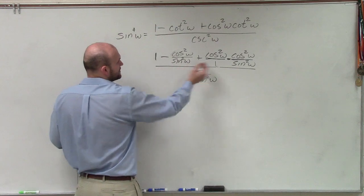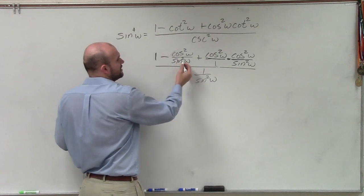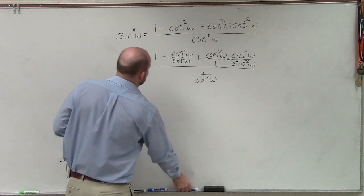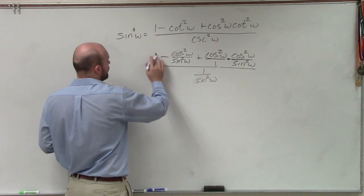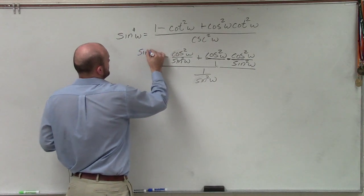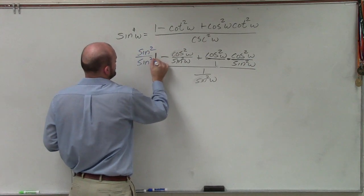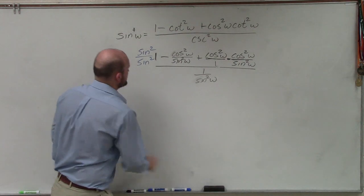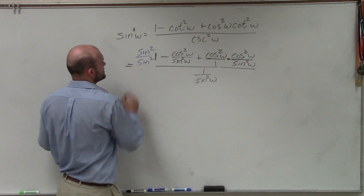So I started thinking that might be a good idea. Therefore, my LCD for all three of these terms, this term, this term, this term is going to be sine squared. So what I do is I just multiply my 1 times sine squared over sine squared. And then what I did is I just subtracted all of my terms and rewrote this as one term.